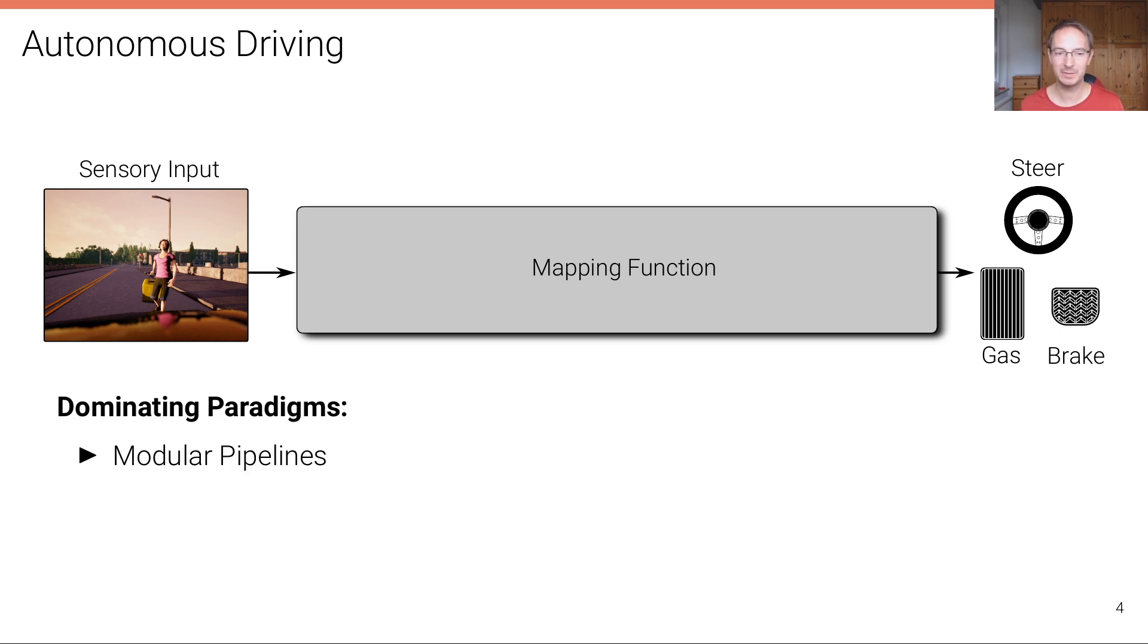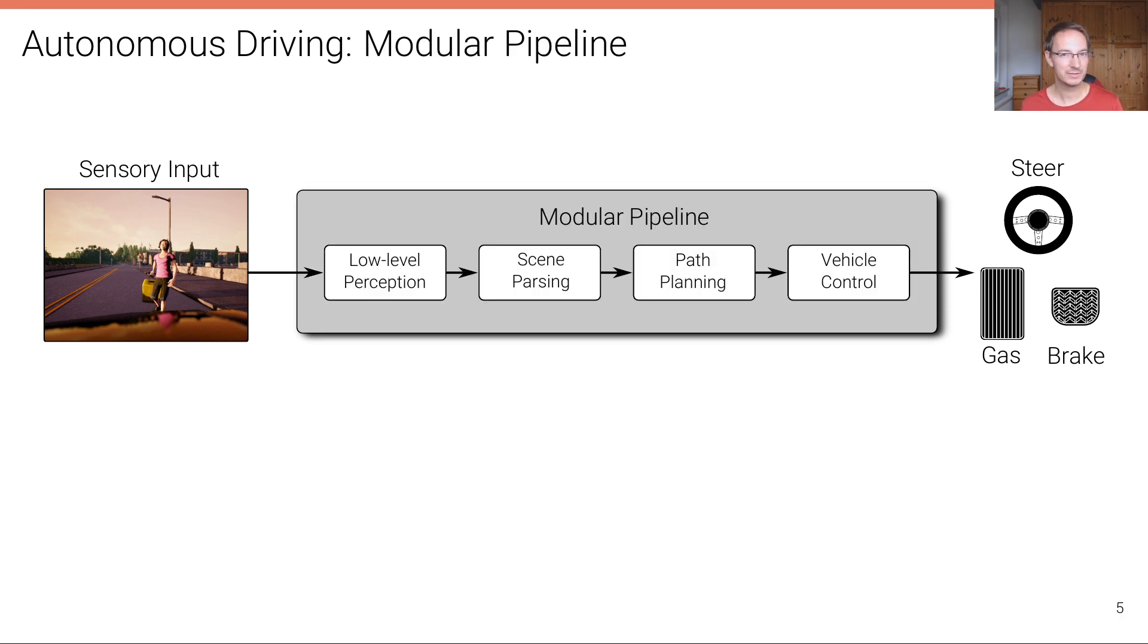There's three dominating paradigms to self-driving. One is the modular pipeline. Second, the end-to-end learning approaches, where also imitation learning falls under this category. And finally, direct perception. Let's have a look at the differences between these different paradigms to self-driving.